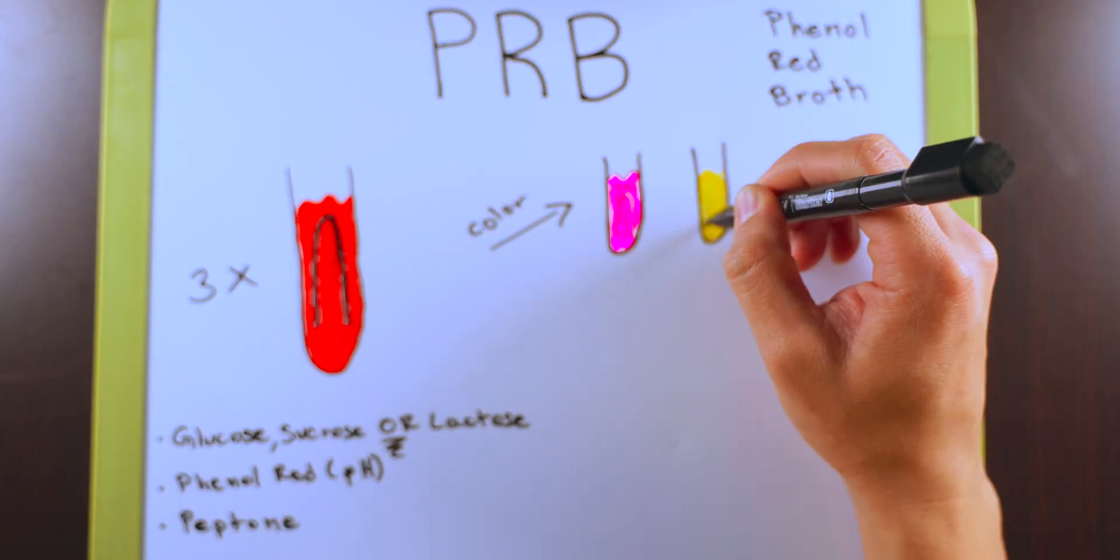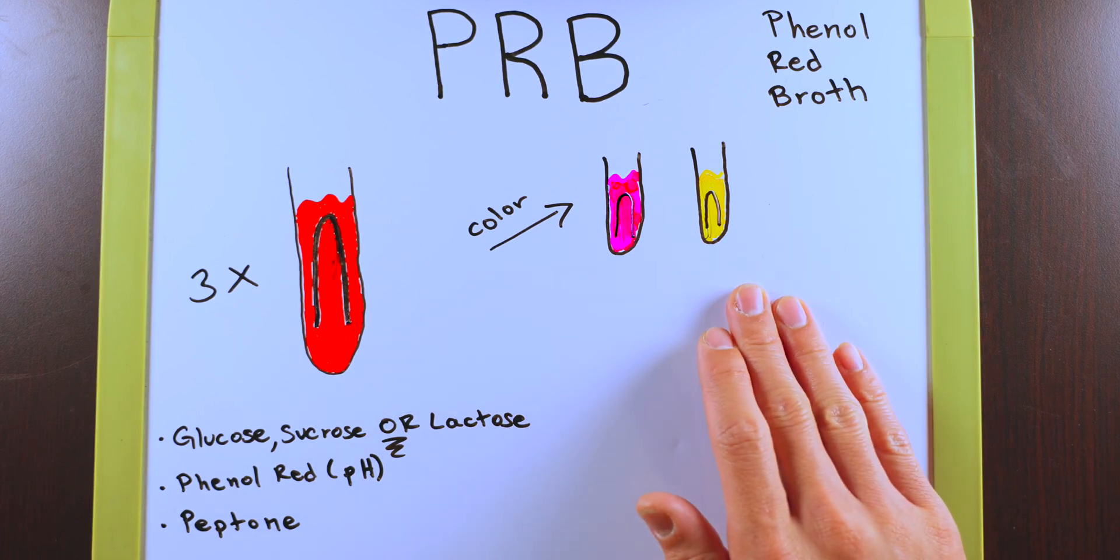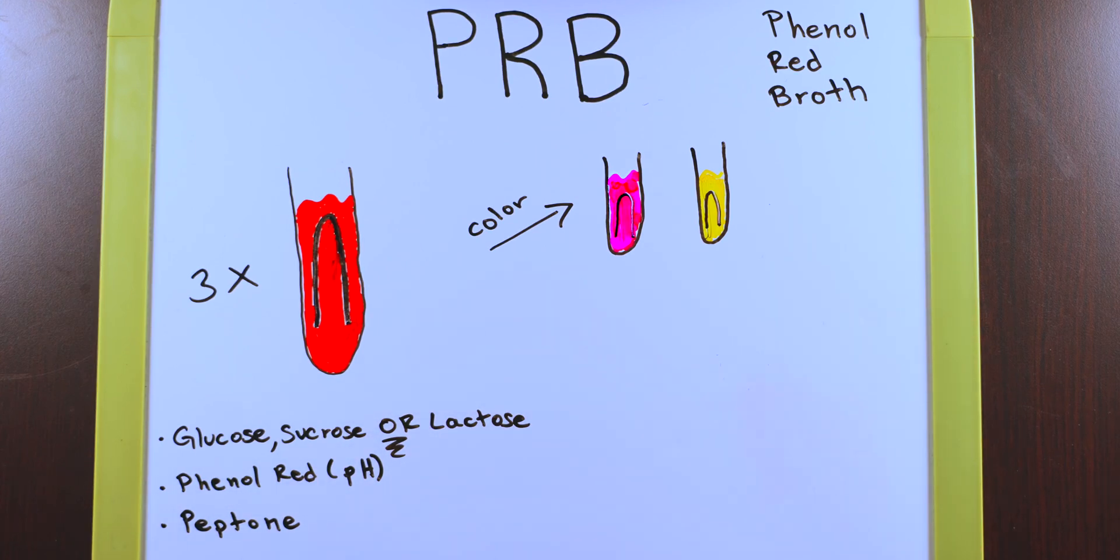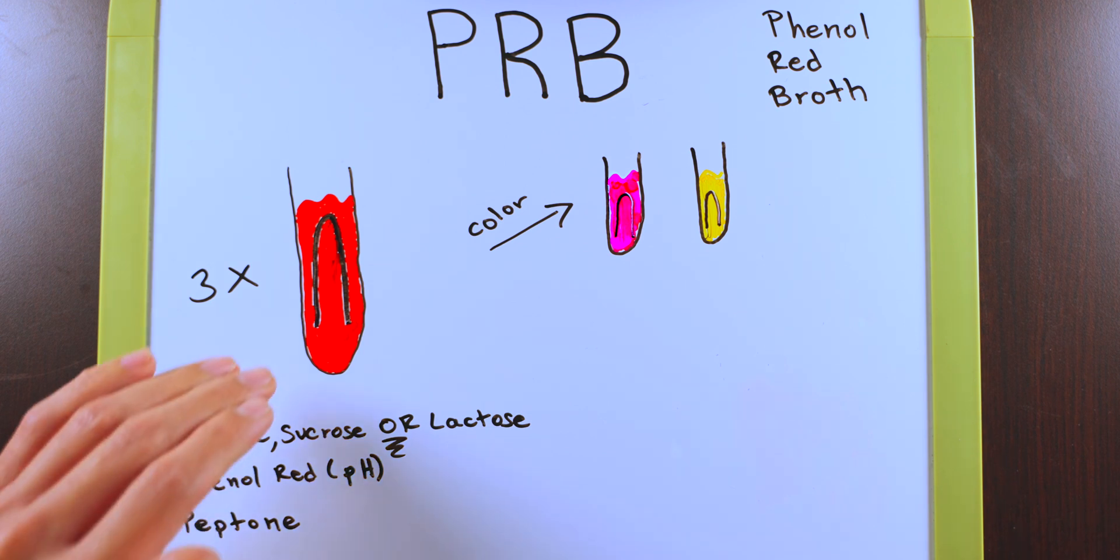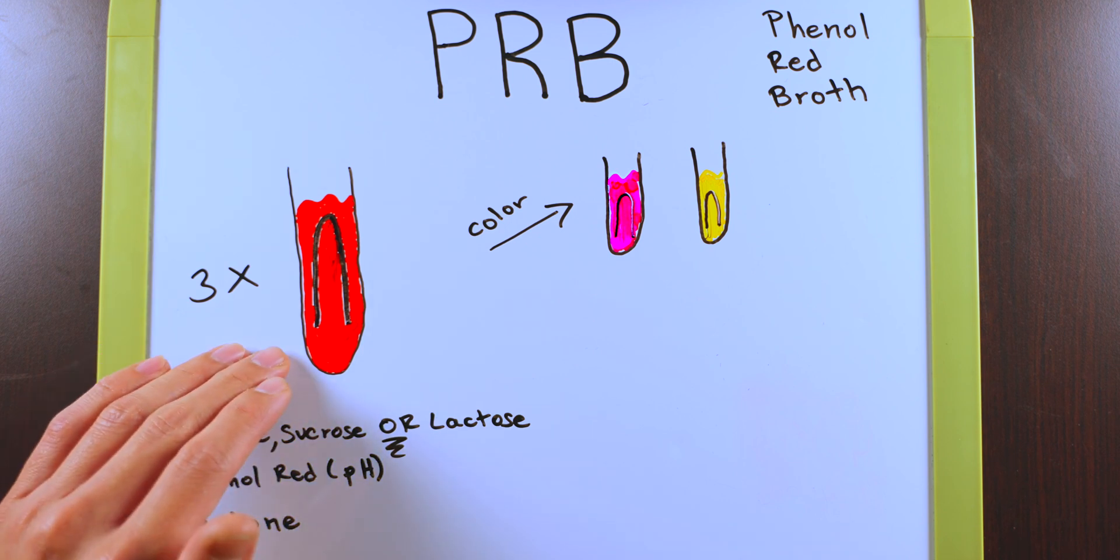The first thing that we're going to look for is a color change. In your test tubes, you're going to want to look for if you have a pink or a yellow color change. Now pink is a little bit more difficult to notice, so what really helped me out when I did this lab was taking a controlled test tube of PRB and it doesn't matter which sugar is inside of it, you just want one that hasn't been inoculated.